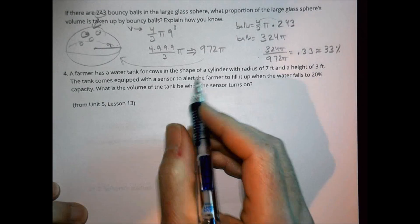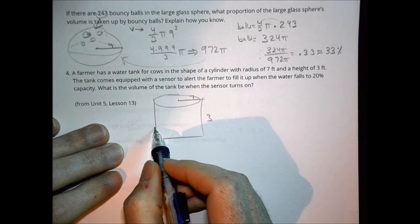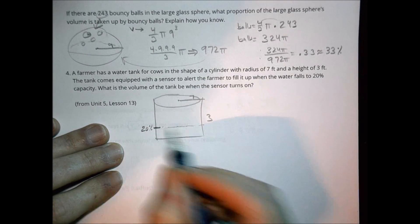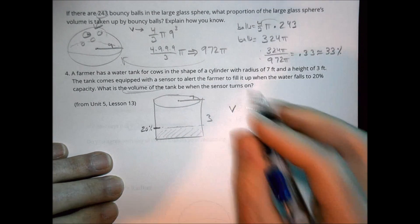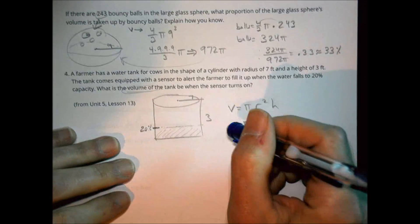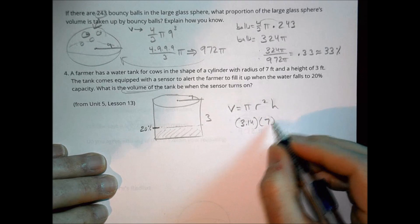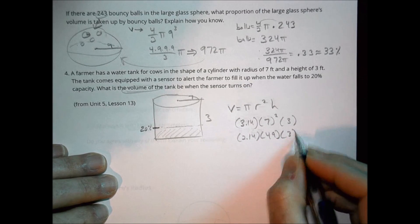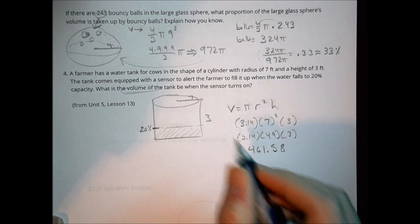Number four. A farmer has a tank for cows in the shape of a cylinder with a radius of seven and a height of three. The tank comes equipped with a sensor to alert the farmer to fill it up when it falls below 20%. So whenever it gets to there, there's some alarm or sensor that says, you're getting low. So let's find the volume. We want to find out when that's going to turn on. So how much water is there? That's what we're trying to figure out. The volume of the whole thing is going to be pi r squared h. And again, that's pi, which is equal to, let's give it a number here. Cause we want to have a number when we're done here, not a pi value. So we're gonna do 3.14. Our radius it said was seven. So seven squared. And our height was three. So we have 3.14 times 49 times three. And when I do all that work right there, that's going to come out to 461.58. So that's how much water is going to be in the entire tank.